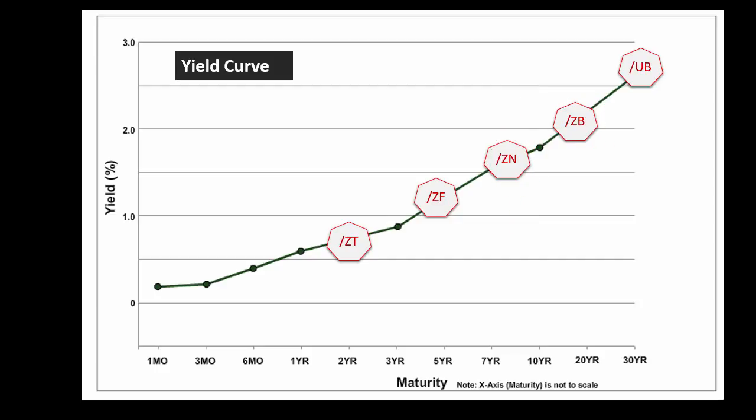So let's look at the yield curve. We have the two year, we have the five year, we have the 10 year, we have the 30 year, and then the ultra contract. Now, instead of betting whether something goes higher or lower, what we want to do is we want to trade the relative difference.